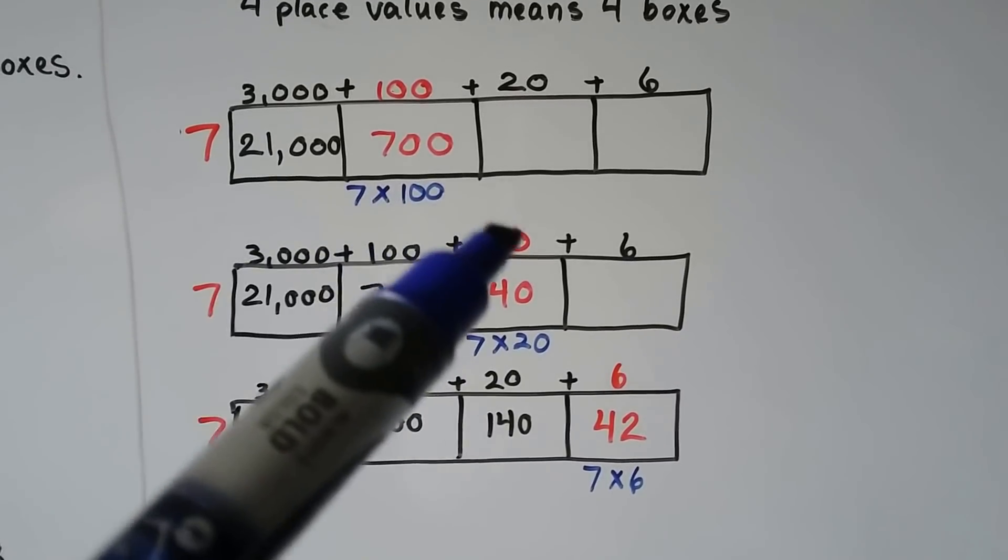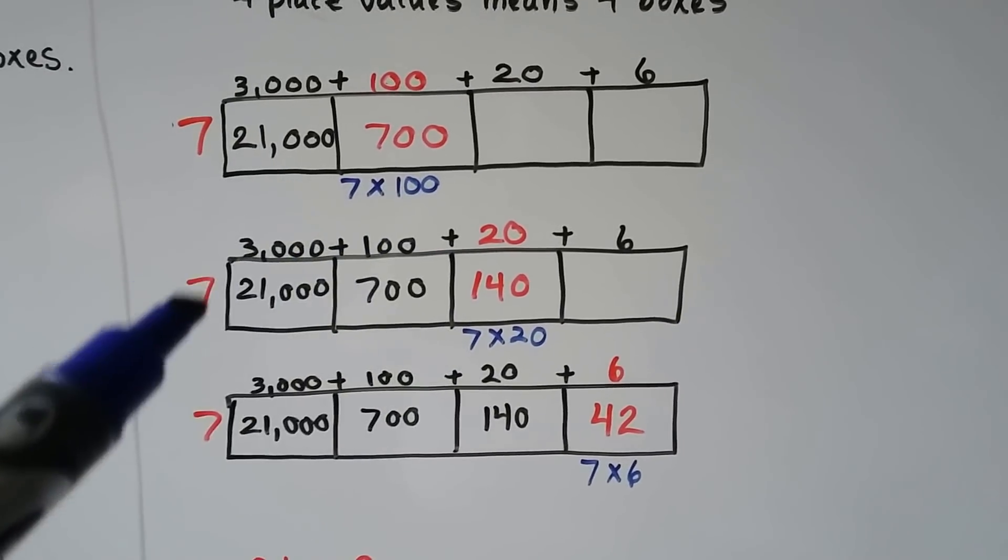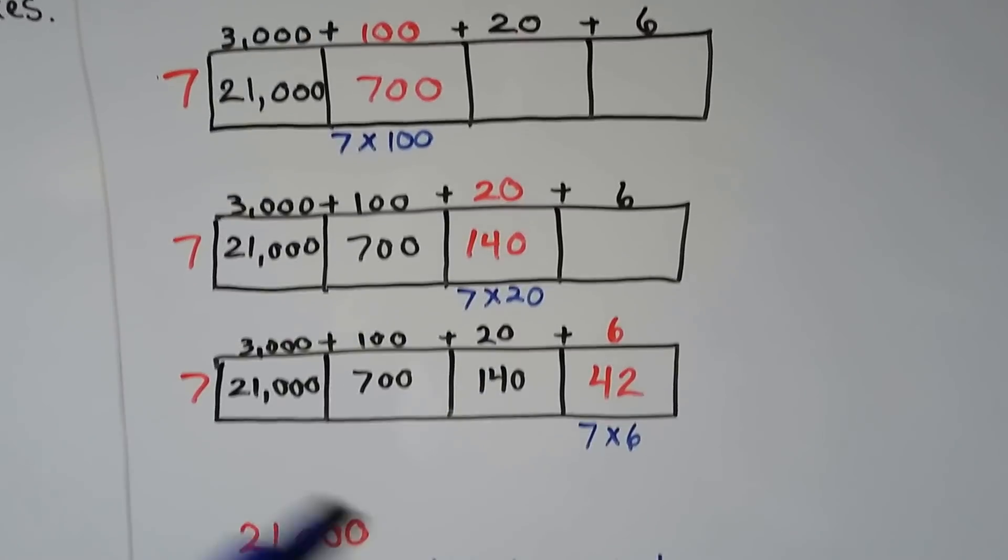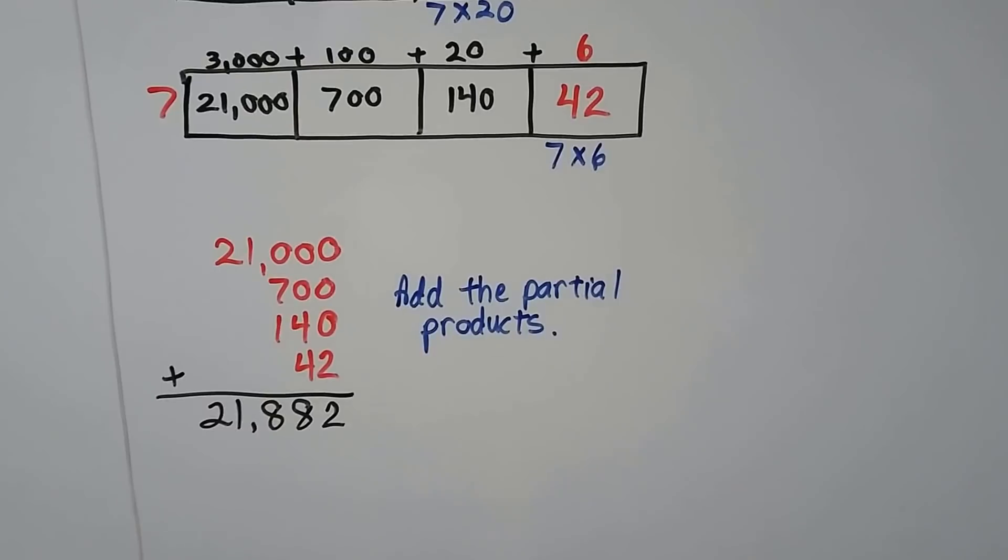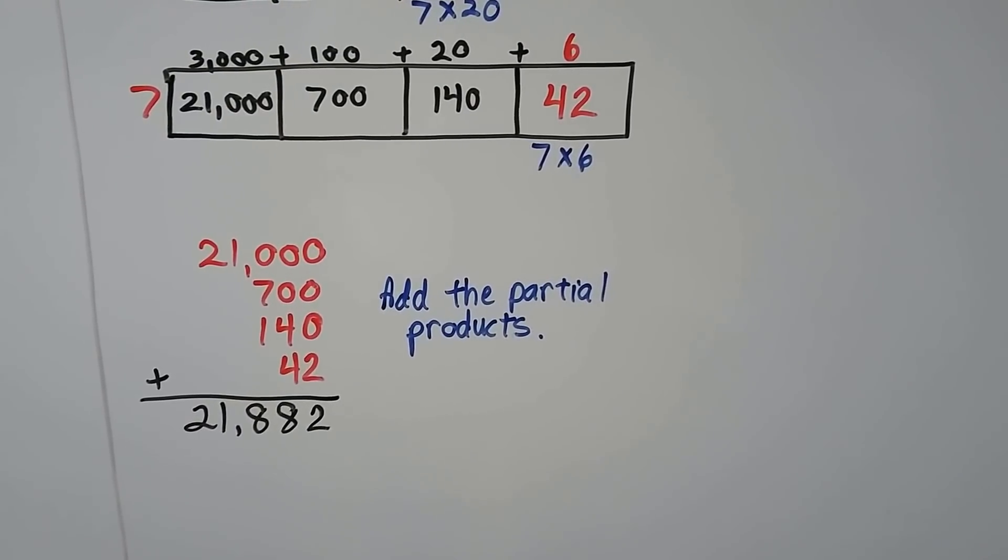Then we multiply the 7 times the 100. That's like 7 times 1 with two zeros, so that's 700. Then we multiply the 7 times the 20. That's like 7 times 2 is 14 with one zero. Then we multiply the 7 times 6, which is 42.